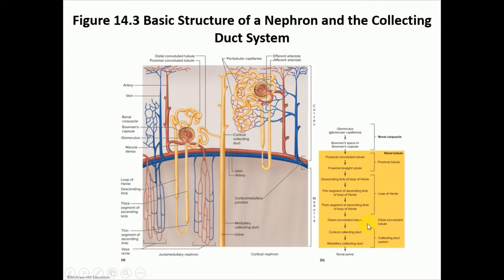The collecting system is made of the cortical and medullary collecting ducts, then down to the minor and major calyces and the renal pelvis. The cortical collecting duct is found in the cortex of the kidney, while the medullary collecting duct is found in the medulla — in those pyramids we discussed.